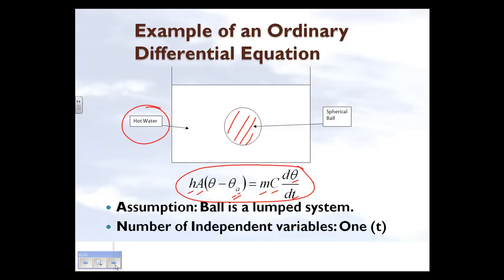Writing this physical problem as an ordinary differential equation requires the assumption that the ball is a lumped system, meaning the temperature everywhere in the ball is not a function of location. At a particular time, the temperature is the same whether you're at the surface or inside the ball — it varies with time but not with respect to x, y, z, or r, theta, phi in any of the three coordinate systems. So the only independent variable is time.